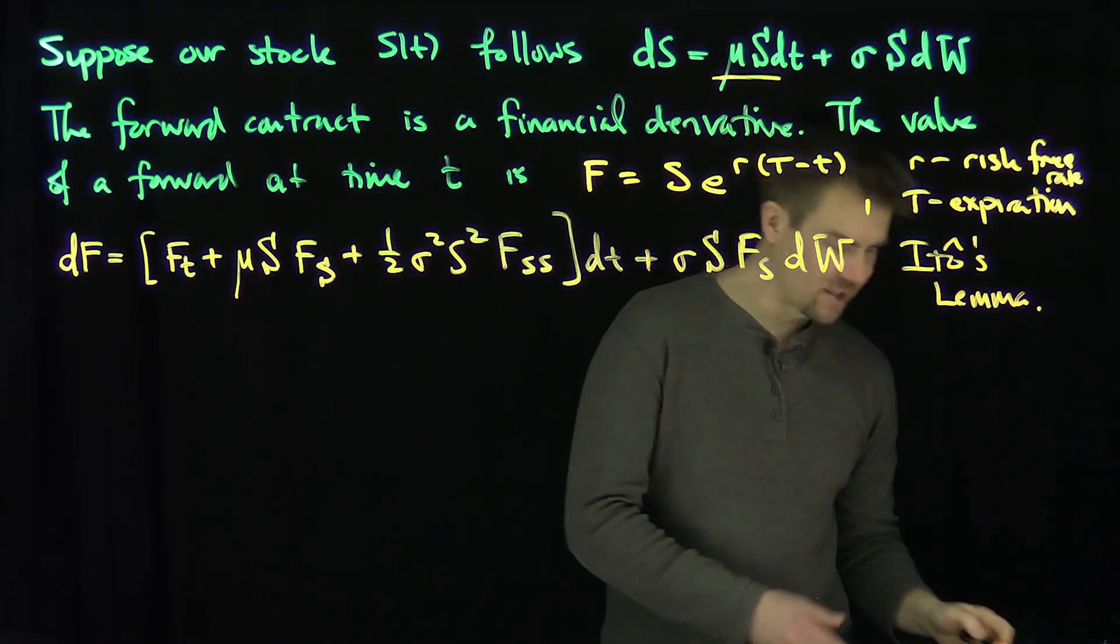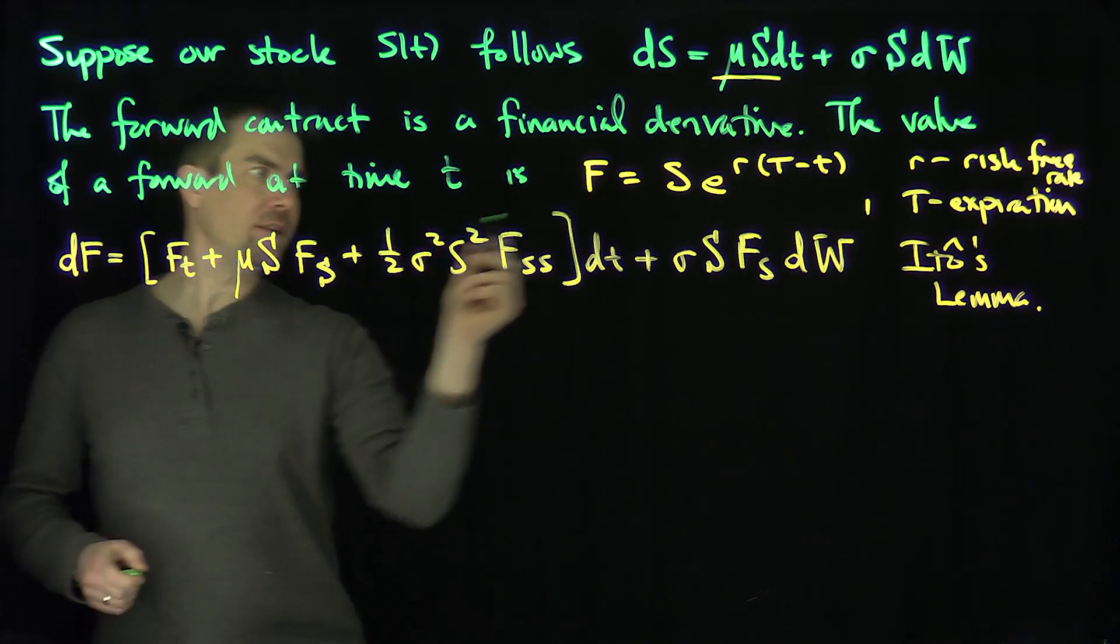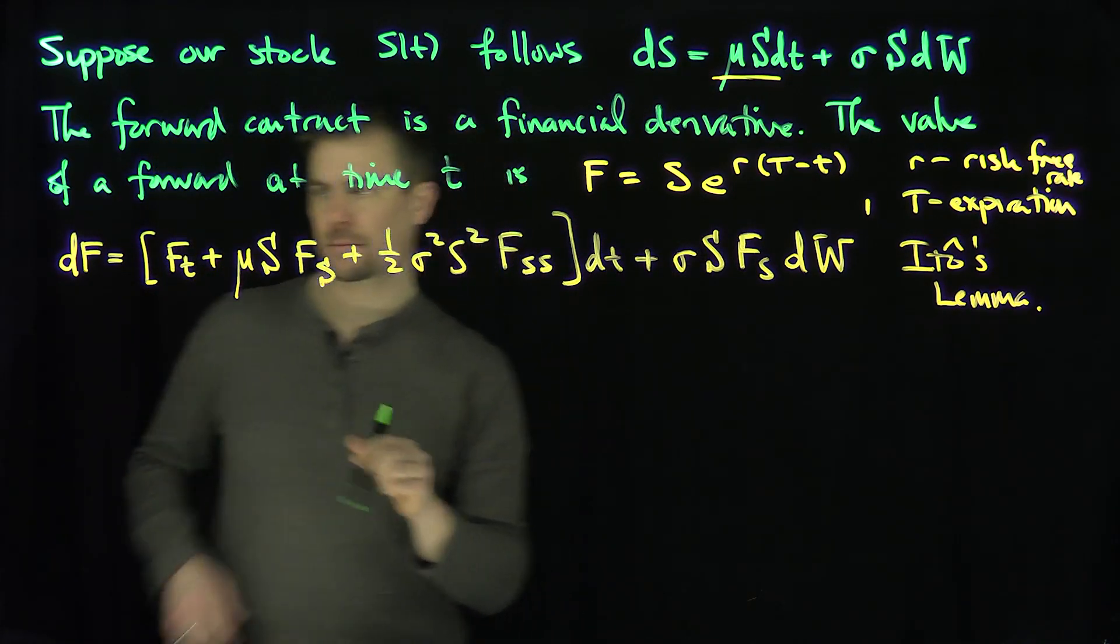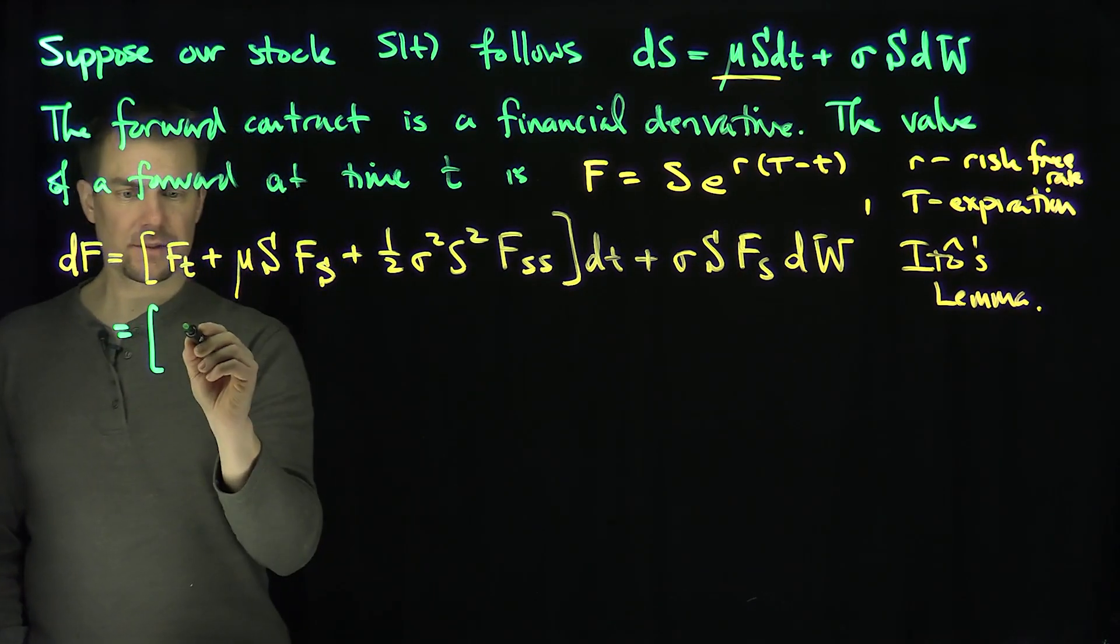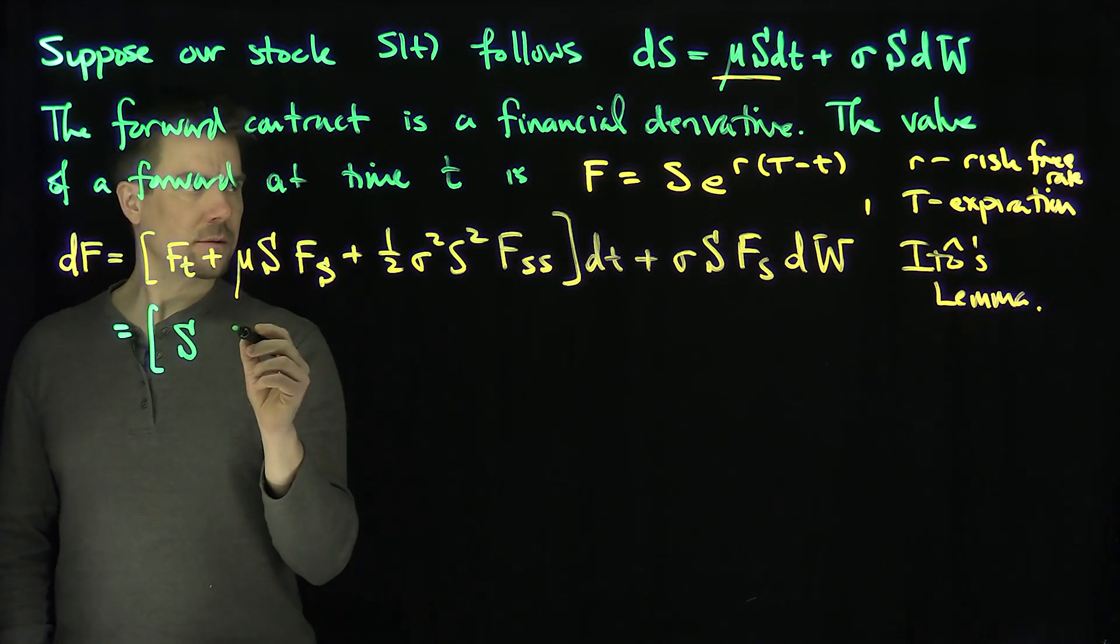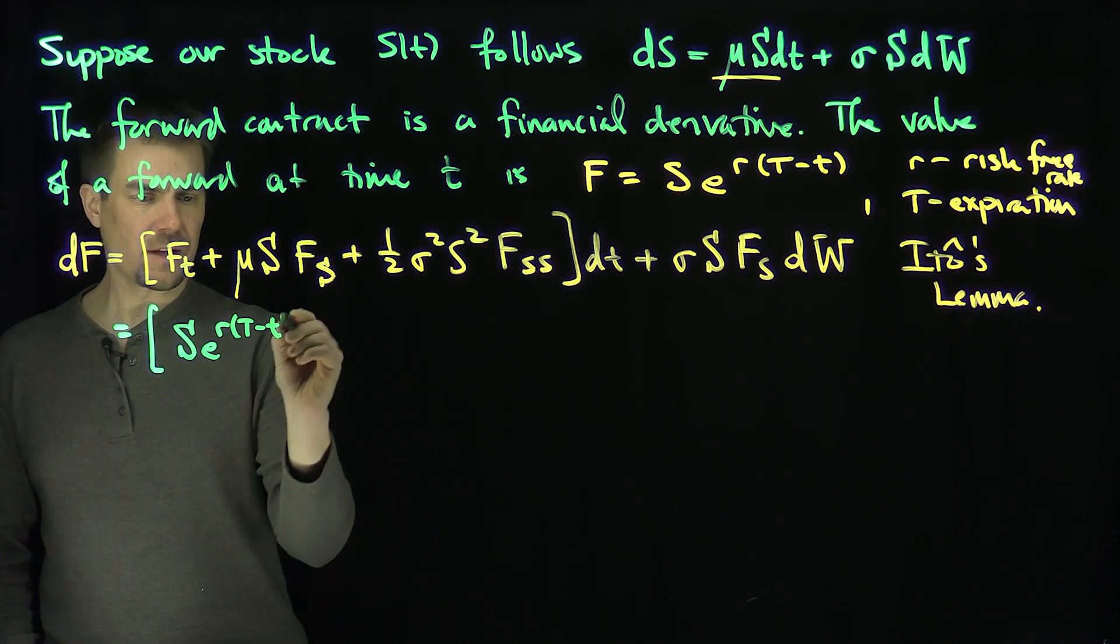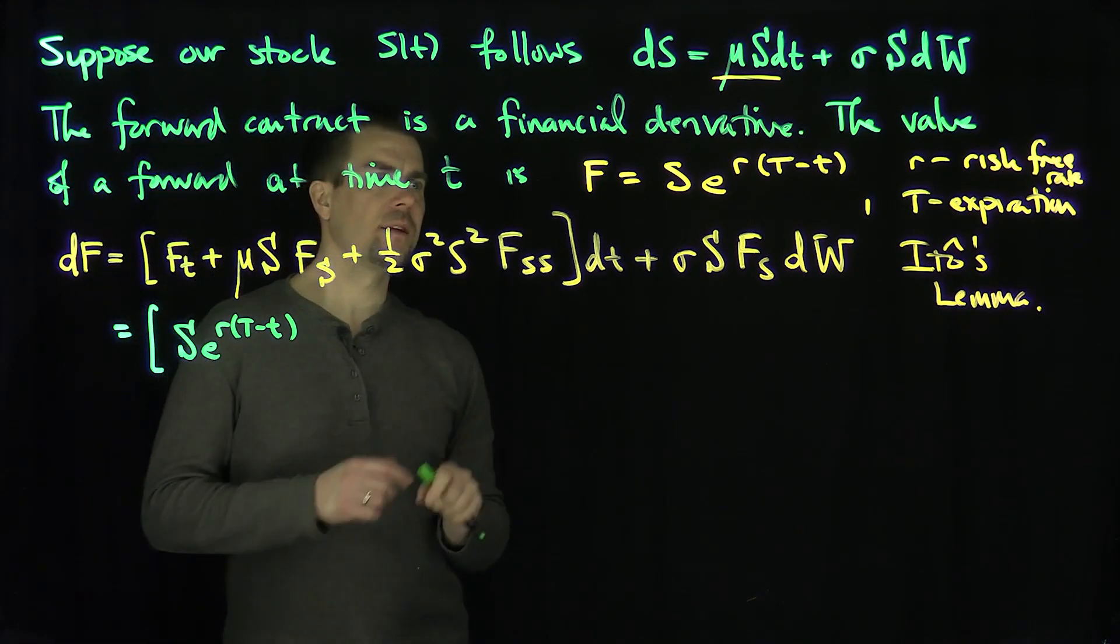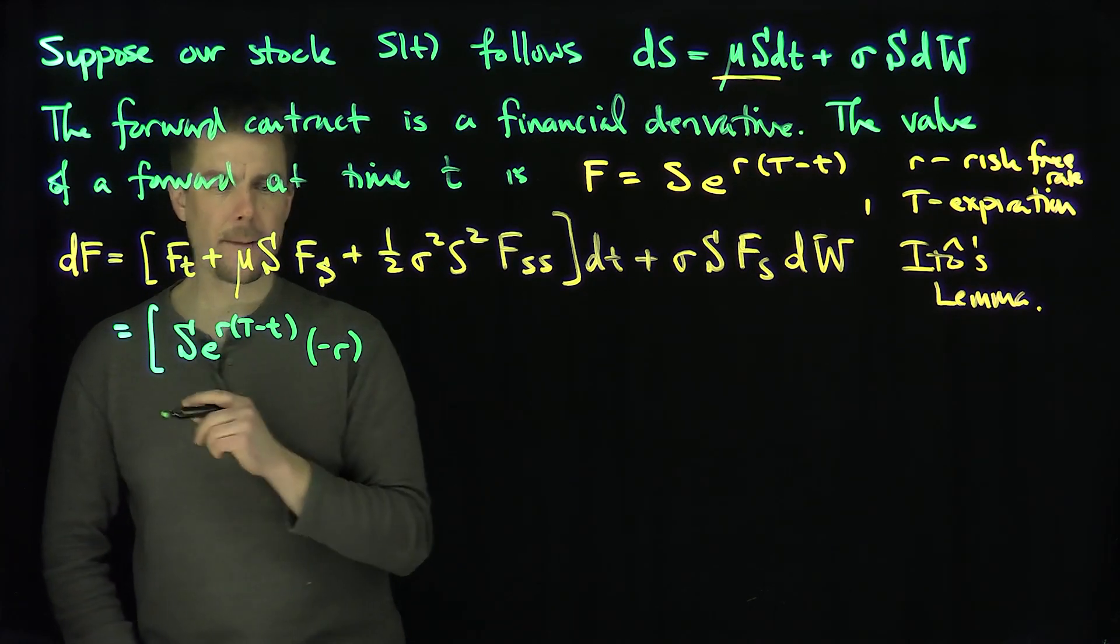And so now, what can we do? We can simplify this a lot. So F_t is going to be S * e^(r(T-t)) * (-r), so negative r.